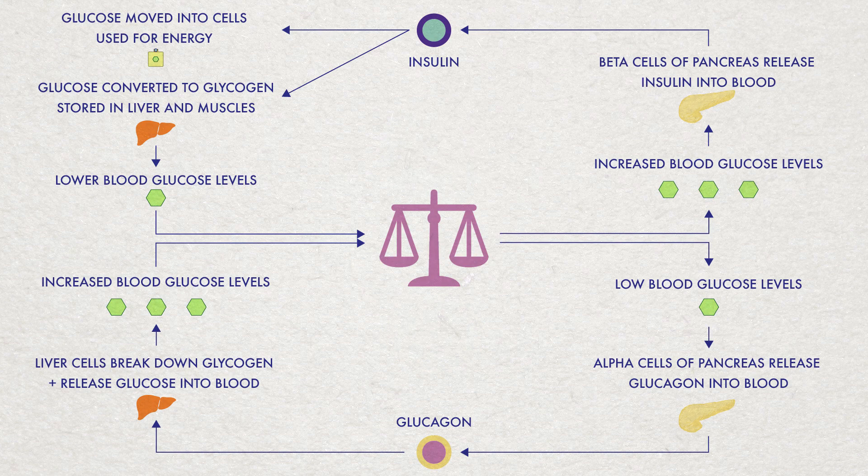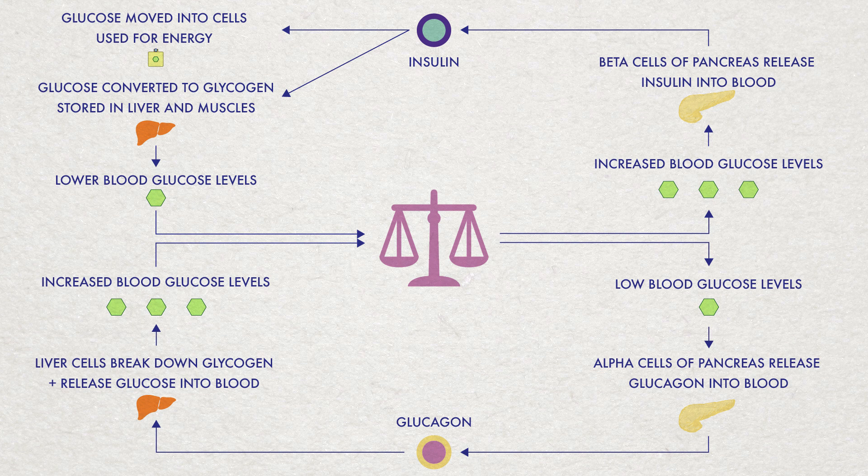To summarize, insulin and glucagon are antagonistic hormones secreted by pancreatic islets. When blood sugar levels are high, insulin is secreted to aid the movement of glucose from the blood and into cells, where it is used for energy or converted to glycogen for storage. When blood sugar levels are low, glucagon is released. This targets liver cells to convert glycogen into glucose. Glucose is then released into the blood, increasing blood glucose levels.